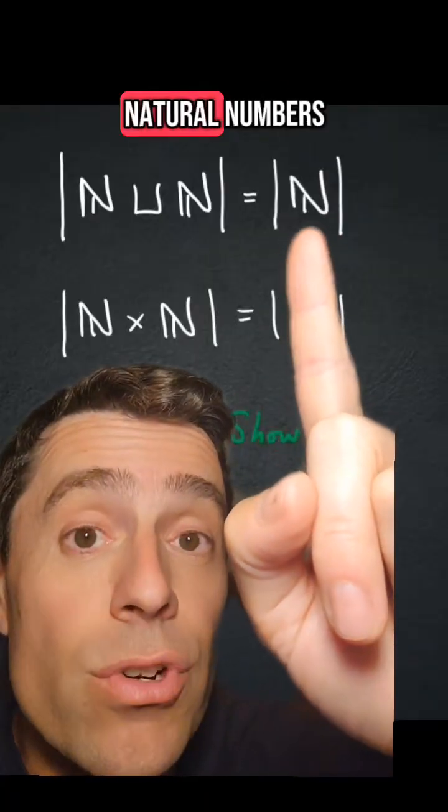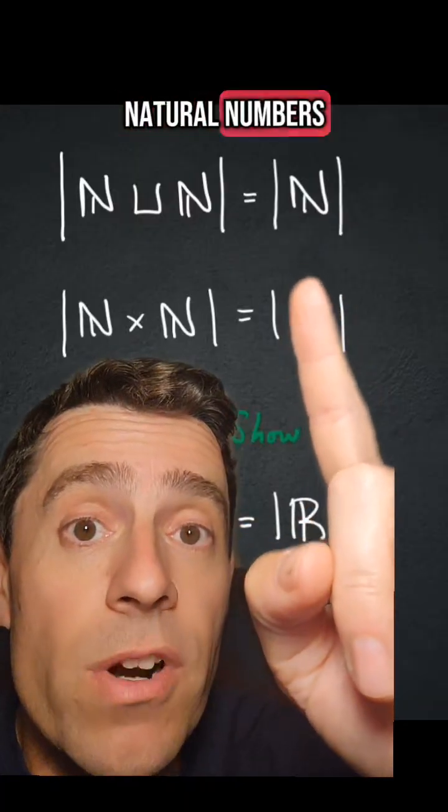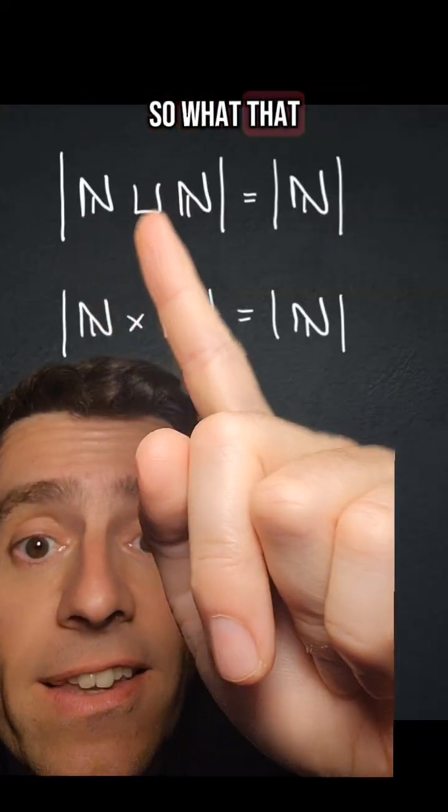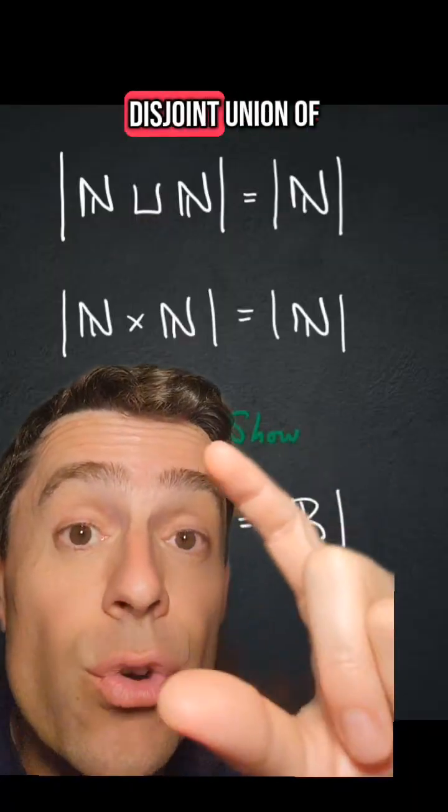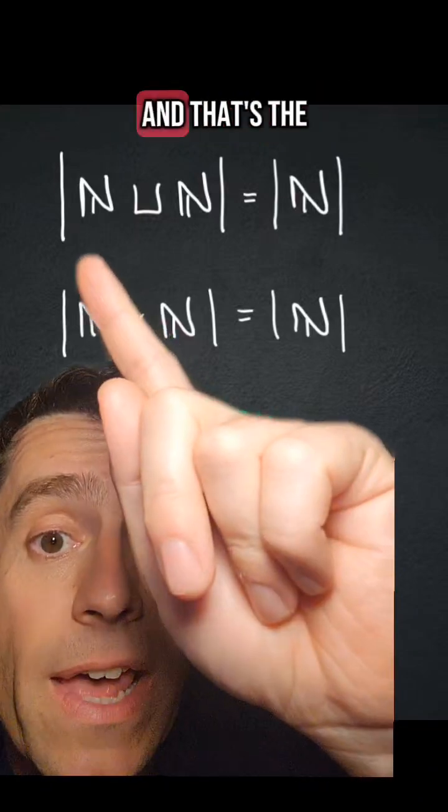Here is the natural numbers, and those bars mean the cardinality of the natural numbers. And here, that symbol is disjoint union. So what that is, is a set that is the disjoint union of two distinct copies of the natural numbers, and that's the cardinality.